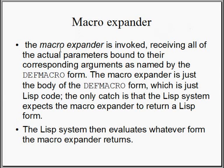The macro expander is invoked, receiving all of the actual parameters bound to their corresponding arguments as named by the defmacro form. The macro expander is just the body of the defmacro form, which is just Lisp code. The only catch is that the Lisp system expects the macro expander to return a Lisp form. The Lisp system then evaluates whatever form the macro expander returns.